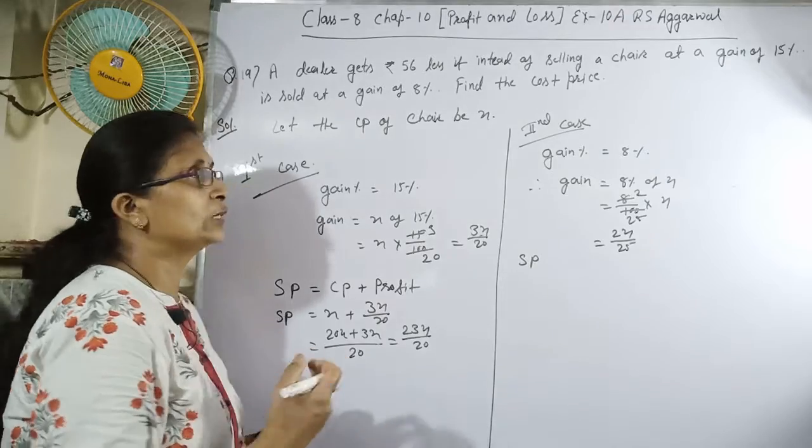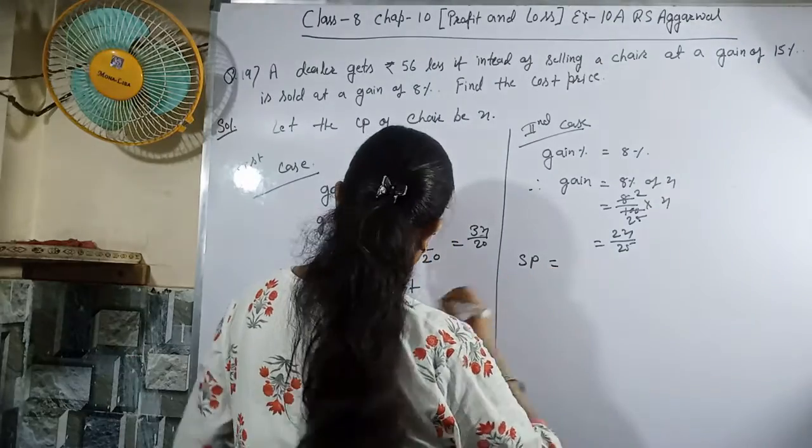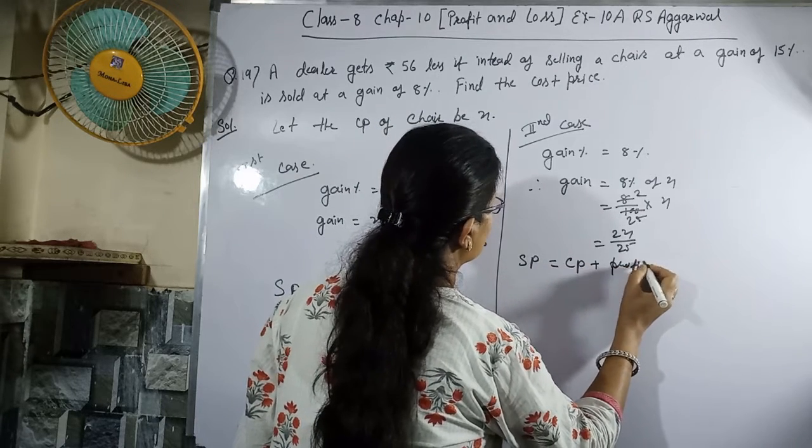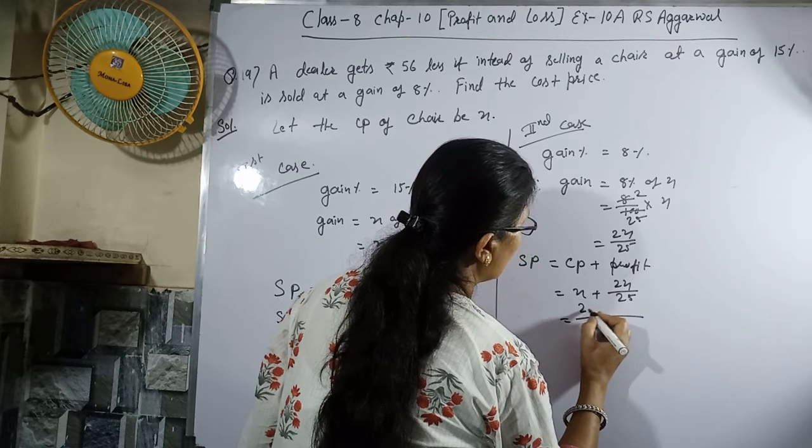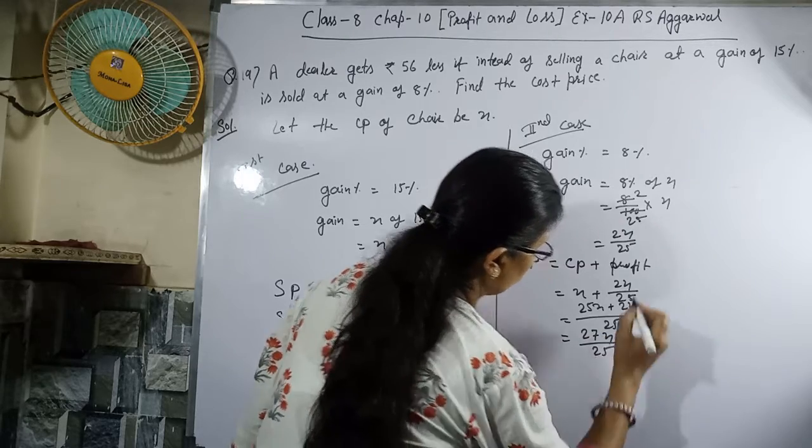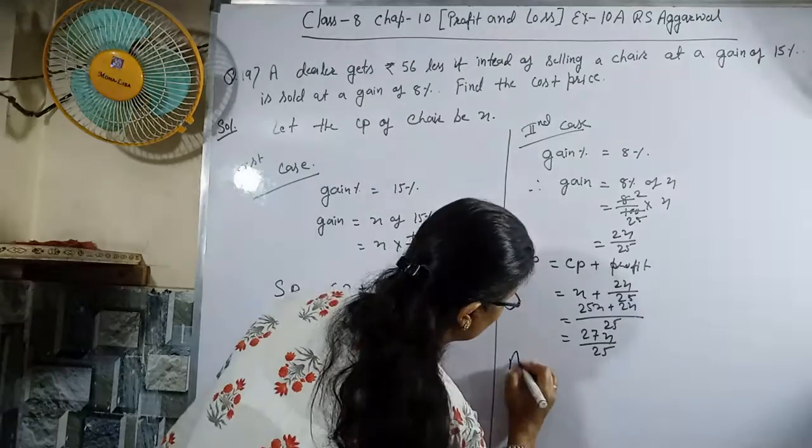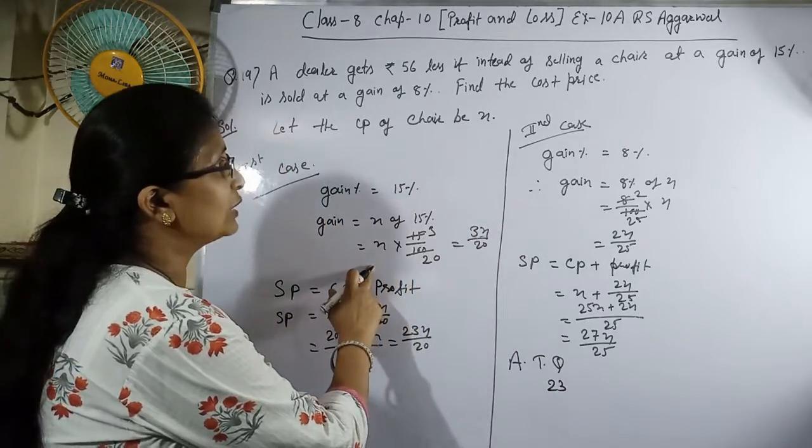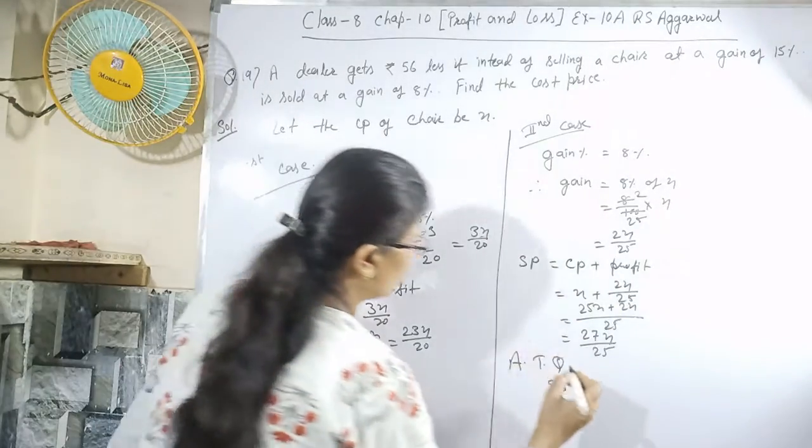The difference between the two profits is given. SP equals x plus 2x upon 25, which is 25x plus 2x, equals 27x upon 25. This is the SP according to the second case. According to the question, we subtract the higher from the lower: 23x upon 20 minus 27x upon 25.